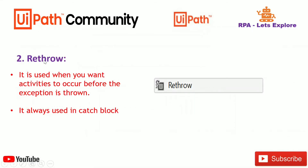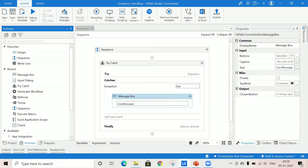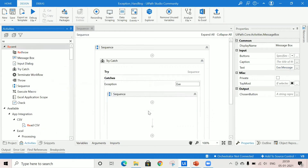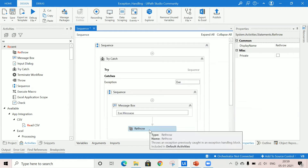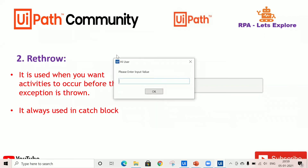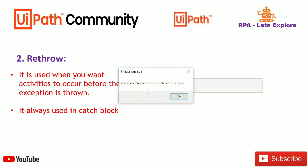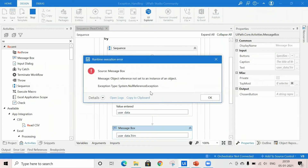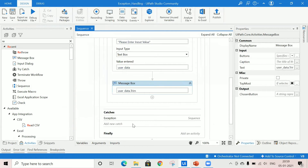Re-throw is one of the activities provided by UiPath to handle exceptions. It is used when you want activities to occur before the exception is thrown. It is always used in the catch block. I'll keep the setup as-is and use the re-throw activity. Running the workflow without providing input, the exception message is shown — 'Object reference not set to an instance of an object' — and the re-throw activity throws the same error again. This is how the re-throw activity is used.